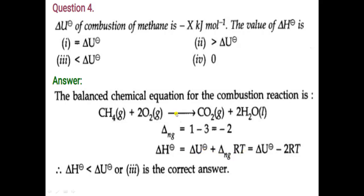Here, ΔU° value is given — it is equal to minus x kJ per mole. Value of R and T is known. Value of ΔNg can be calculated using the formula: number of moles of product minus number of moles of reactant. Here, number of moles of product is 1 — we consider only carbon dioxide gas, since water is in liquid state. On the reactant side, oxygen is gaseous and methane is also gaseous, so 2 plus 1 equals 3. So ΔNg = 1 minus 3 = minus 2.